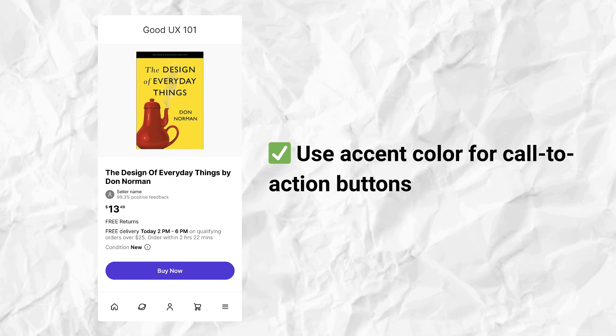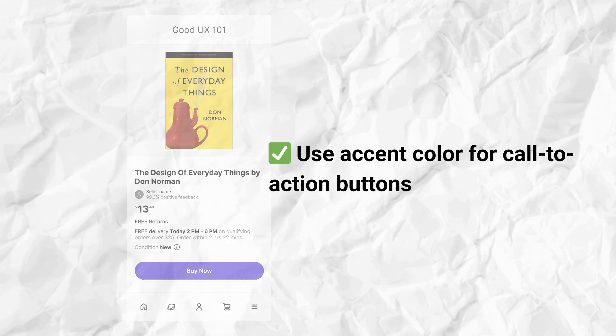Accent color shall be used only on the call-to-action button on that page — it could be 'Buy Now', 'Start Now', 'Register', or 'Join the Email List'. The call-to-action button is the entry point to the next step of the user flow. If you color something else instead, users will be very confused about what the next step is. So go and fix that now.